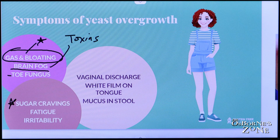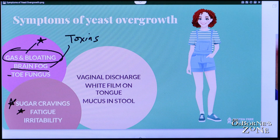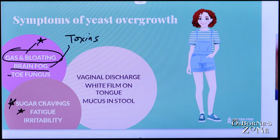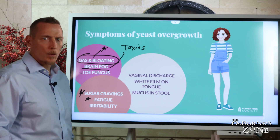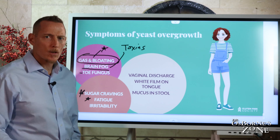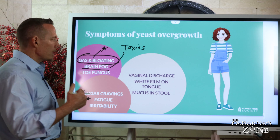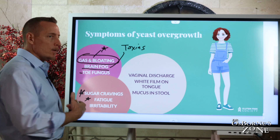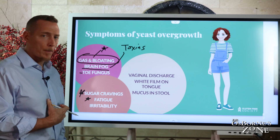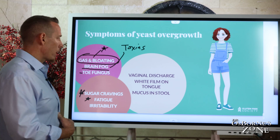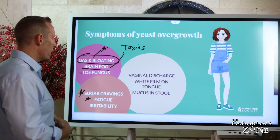Fatigue is very common. Yeast are thieves — they'll steal your B vitamins and use them to help themselves, creating problems within your GI tract that will drag you down. Irritability as well. So if you have high blood sugar, low blood sugar, severe cravings, irritability, mood swings, bloating, and brain fog, this is probably a sign that you have yeast overgrowth — predominantly, in my experience when I see people, yeast overgrowing in their GI tracts.